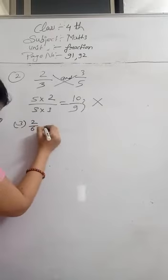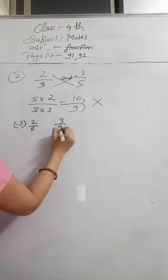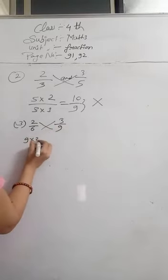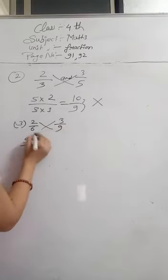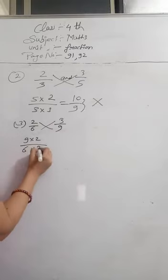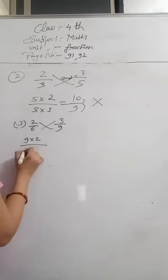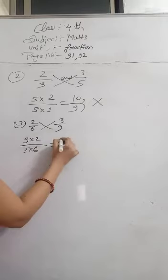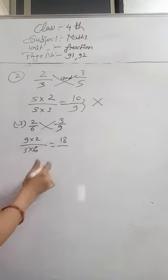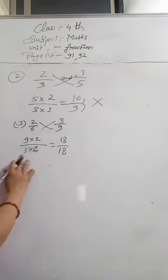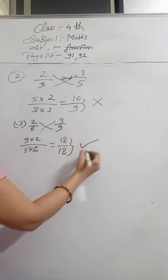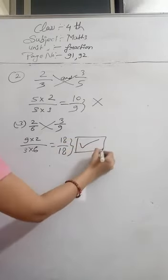Now we will do the third number: 2 by 6 and 3 by 9. We will do cross multiplication: 9 multiplied by 2 and 3 multiplied by 6. 9 twos are 18 and 6 threes are 18. So these are equal, so we will put a tick sign here.